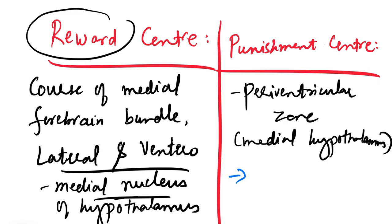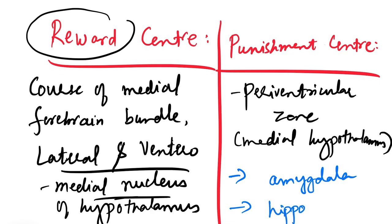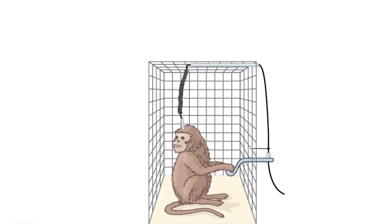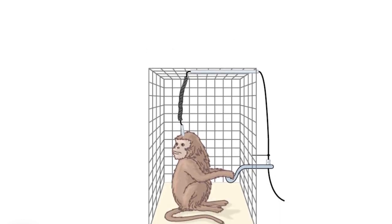For punishment, along with the periventricular zone, less potent areas of the amygdala are also involved. The limbic system controls the emotional status and has a strong connection with the hypothalamus, so indirectly it controls these functions as well. Other structures are also involved in the punishment center.